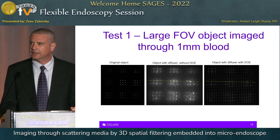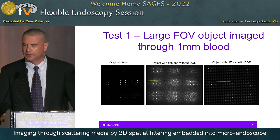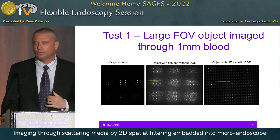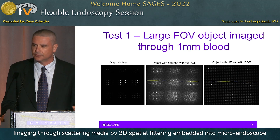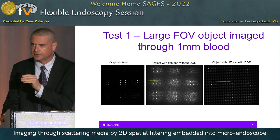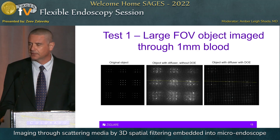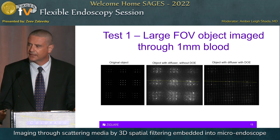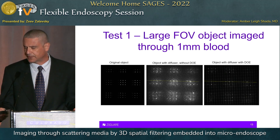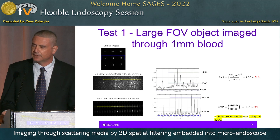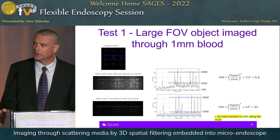Here you can see several experimental results obtained with our novel imaging model. In this test, we imaged a resolution target over a large field of view through one millimeter of blood. On the left side of the slide you can see the resolution target without blood; in the middle, how it appears in a regular imaging system without our diffractive optical element; and on the right, how it appears with the diffractive optical element. A quantified analysis shows an improvement in signal-to-noise ratio by a factor of four over this large field of view.